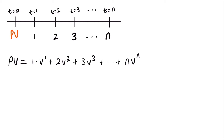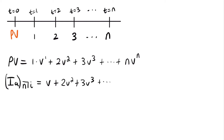We have a notation for this: capital IA, with parentheses, for n number of payments, bracketed with interest rate i. This equals v plus two times v squared plus three times v cubed, adding up until n times the present value factor to the power of n. This notation represents an increasing arithmetic annuity, where 'a' indicates present value, 'n' is the number of payments, and 'i' is the interest rate. We'd like a more closed form — an easier formula — so we need to do some equation manipulation.